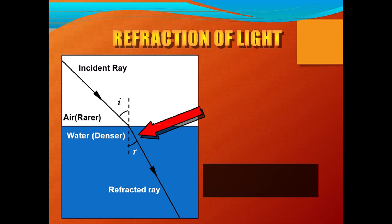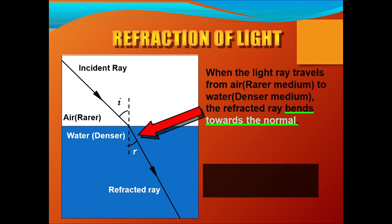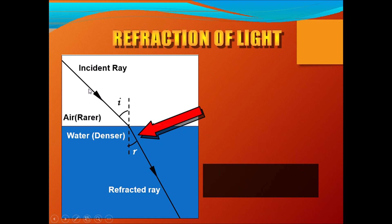Let's talk about optical density. Here we have two transparent media: air and water. Air is a rarer medium and water is a denser medium — I am using the term optical density. When you say rarer medium, the optical density is less; when you say denser medium, optical density is more. Now, a ray of light is incident — coming from air going to the water. This is called the incident ray. The dotted line is the normal, and the angle between the normal and the incident ray is called the angle of incidence, denoted as i.